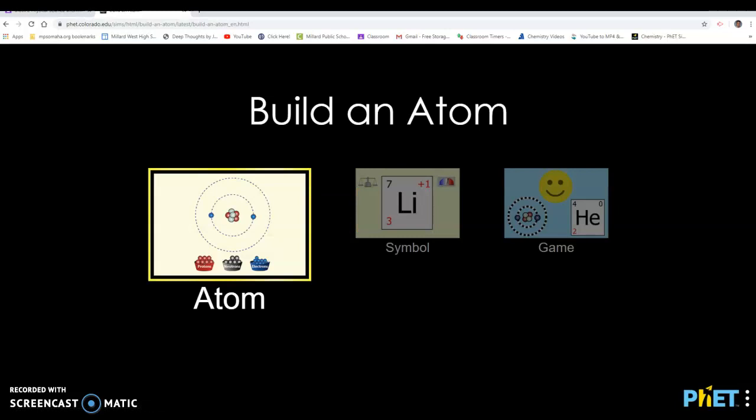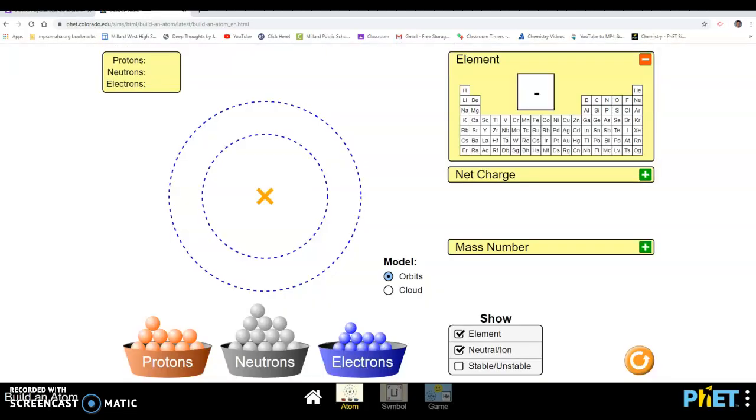You'll notice we have three choices: the atom thing, the symbol, and the game. What I want you to do is we're going to work through these two things first, the atom and the symbol. This game section is going to be the graded portion. It's going to be how you're going to earn points on it. First thing, I just want you to open up this atoms tab.